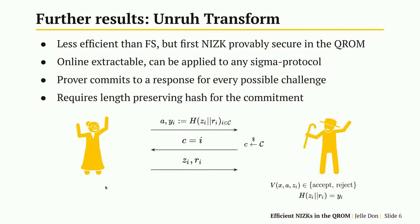As an additional result, we show that the Unruh transformation — which is comparable to but less efficient than the Fiat-Shamir transformation, and was the first NIZK provably secure in the QROM — is also online extractable. It has the advantage of being applicable to any sigma protocol, but the prover must commit to a single response for every possible challenge, making it considerably less efficient than Fiat-Shamir, especially when the commitment scheme is required to be a length-preserving hash function. We show that this requirement is no longer needed using our reduction.